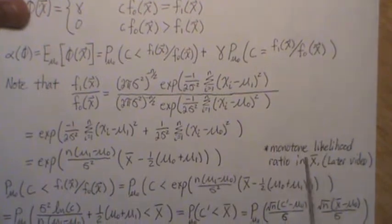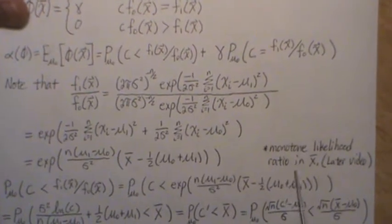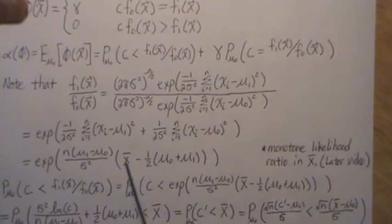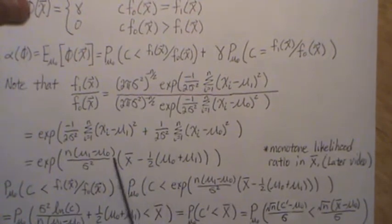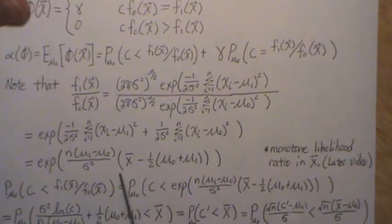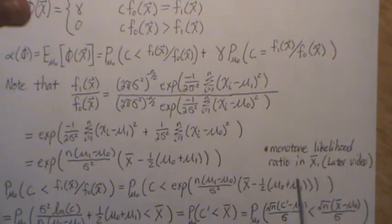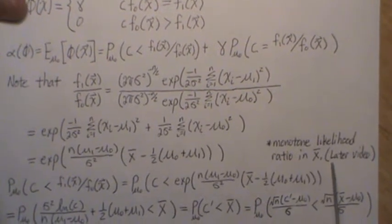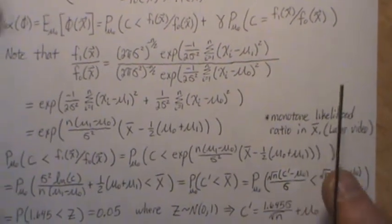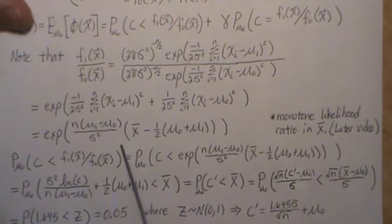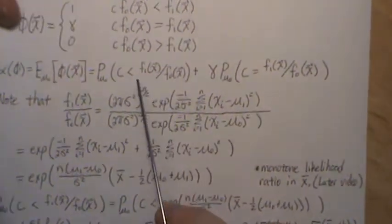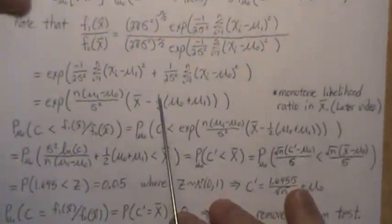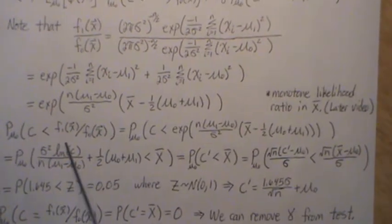Notice that the likelihood ratio is monotone in x bar, which means if x bar gets bigger, this quantity gets bigger, and if it gets smaller, this quantity gets smaller. I'm pointing that out now because we're going to examine monotone likelihood ratios in more depth in a few videos, but we don't need it for this video. So now let's look at these probabilities.